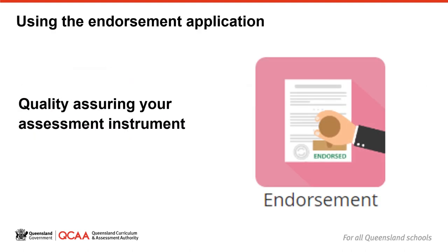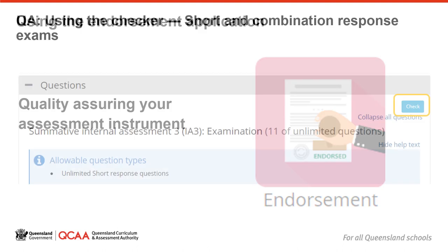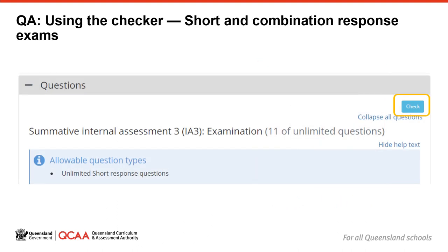Using the endorsement application – quality assuring your assessment instrument. When you are close to completing the assessment writing phase for a short or combination response examination, you can use the endorsement app's check feature to check your items for compliance with the rules defined by the syllabus for this assessment technique. Just click on the blue check button in the questions accordion. For example, some subjects may specify the proportion of item types or require some items to elicit responses within particular word lengths. For extended response type assessment you will not have a checker, but if you try to send your assessment instrument to your approver and it does not contain all expected attachments and have all the necessary fields completed, a warning will appear and the endorsement app will prevent progression until all requirements are met.